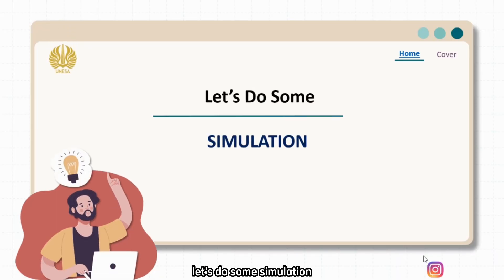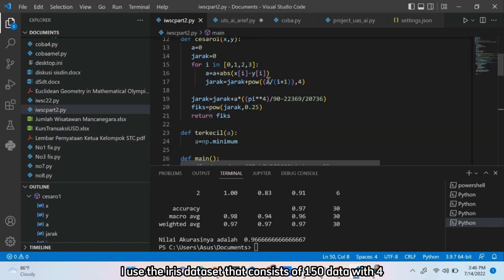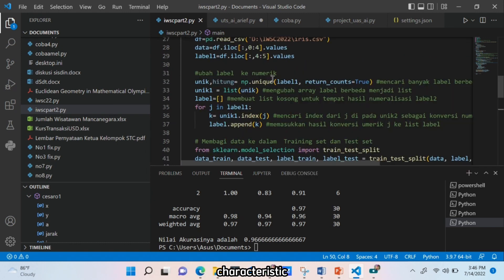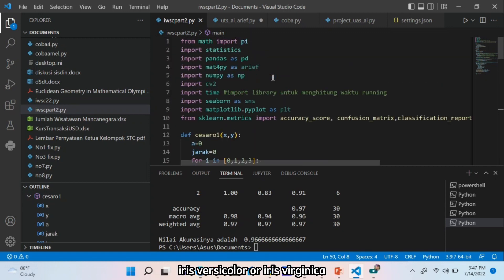Let's do some simulation. In this simulation, I use the iris dataset that consists of 150 data with 4 characteristics. Each of the data have been labeled as iris setosa, iris versicolor, or iris virginica. And I use the ratio of 8 over 2 to divide the train set and the test set.